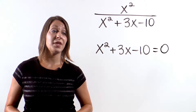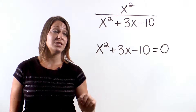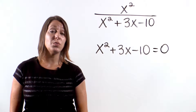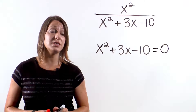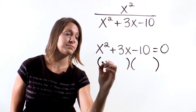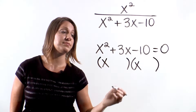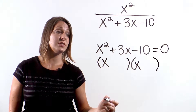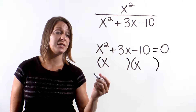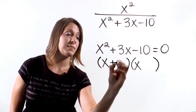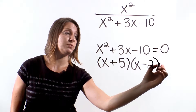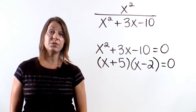Notice that this denominator has an x squared — it is a complete trinomial. Before we can solve for 0, we need to factor this trinomial. We put our x's in place and need two numbers that multiply to negative 10 and add to positive 3. That will be positive 5 and negative 2. So we have (x plus 5)(x minus 2) equals 0.